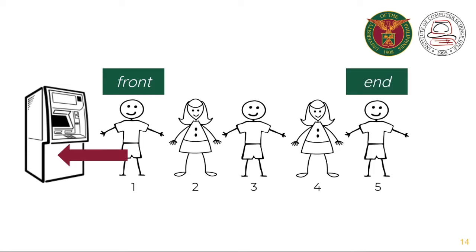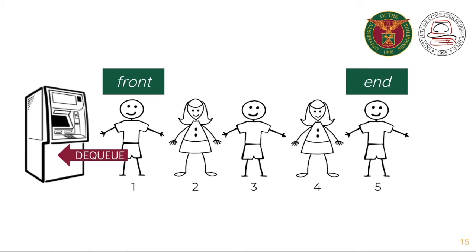If person number one has already finished using the machine, then that person will leave the queue or will be dequeued or will be deleted from the queue. So person two now is the new front of the queue.